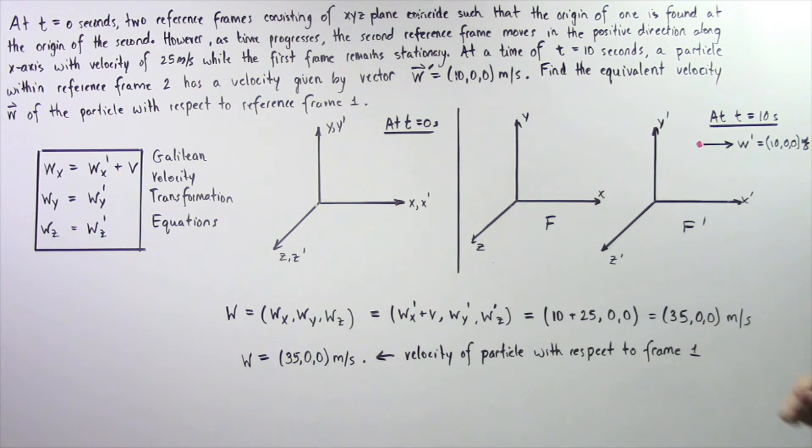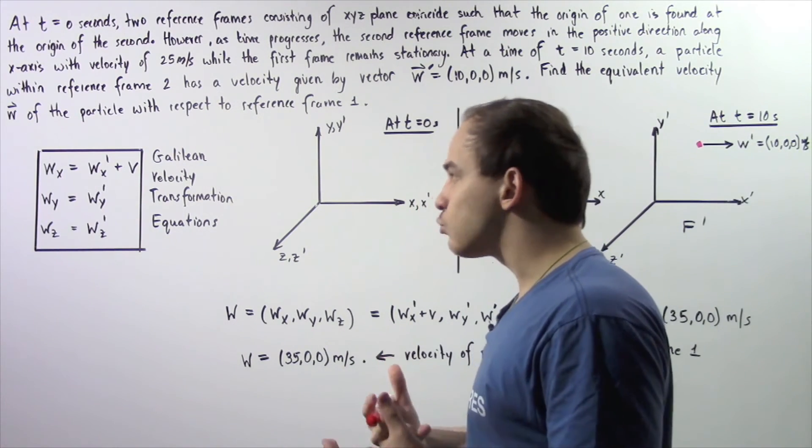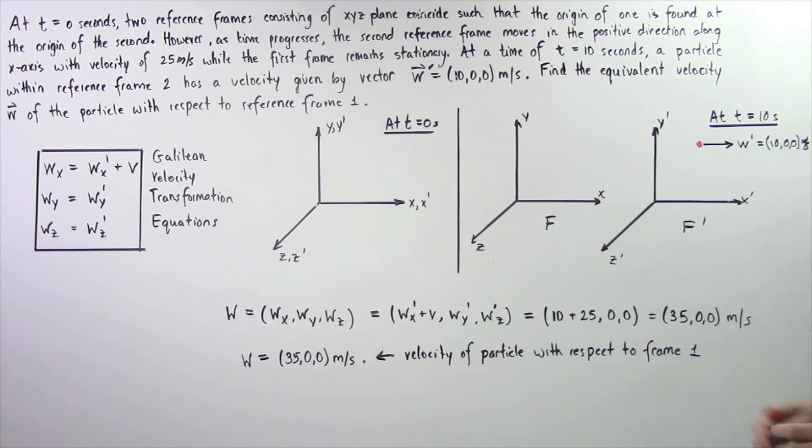Now w_y prime is 0, and w_z prime is also 0. So we have 10 plus 25, that gives us 35, 0, 0 meters per second.